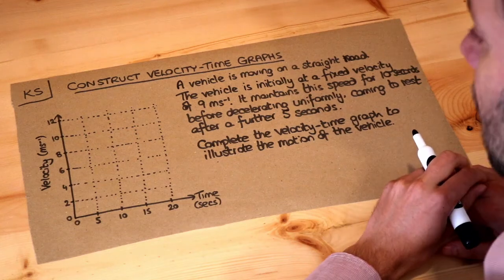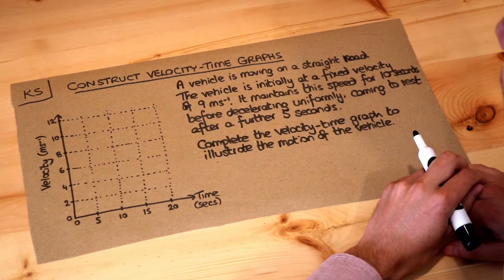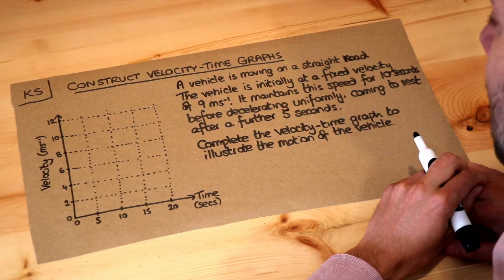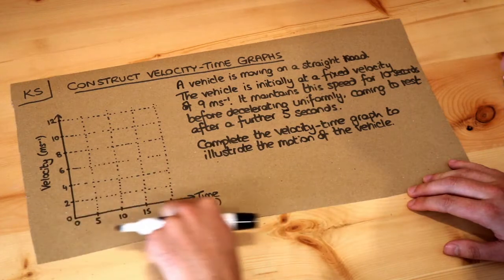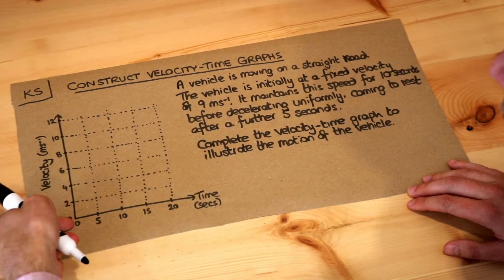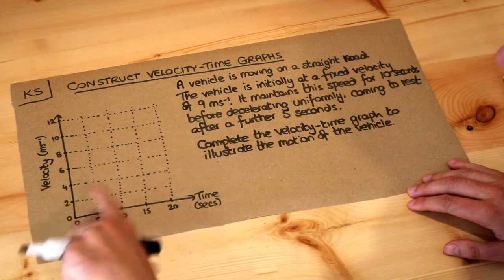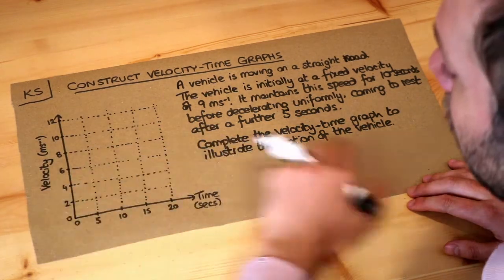Hello and welcome to Dr. Ross Mass's key skill video on constructing a velocity-time graph. A velocity-time graph, sometimes also known as a speed-time graph, is where on the x-axis — the horizontal axis — you have the time, so as more time passes you go from left to right, and then on the y-axis, the vertical axis, you have the velocity.